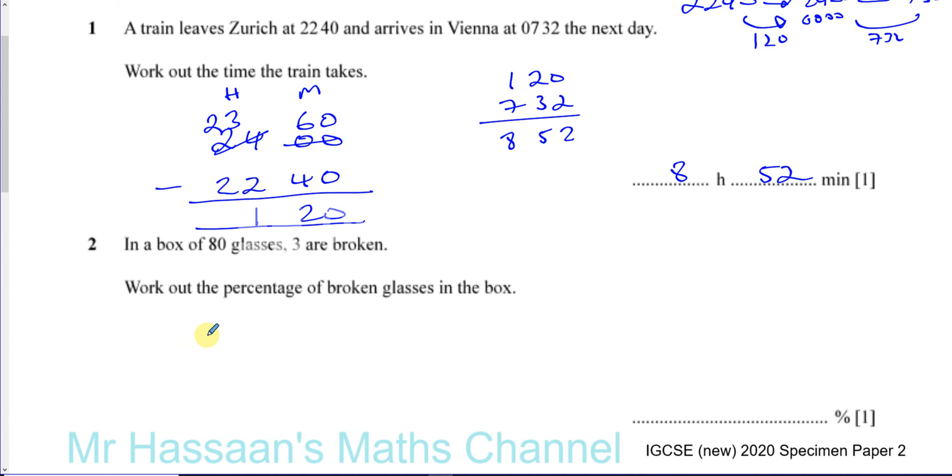So you're trying to find what percentage one number is of another. Work out the percentage of broken glasses in the box. What is the percentage of three out of 80? The percentage of broken glasses is the percentage that three makes out of the total of 80.